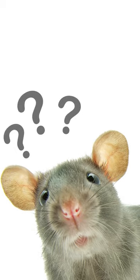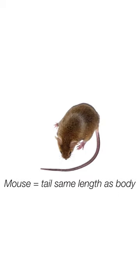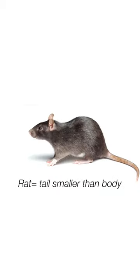One way to distinguish the difference between rats and mice is the size of the tail. The tail of a mouse will be about the same length as their body, meaning a 3-inch mouse will also have a tail around 3 inches long. Rats will have tails that are smaller than their bodies.